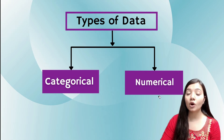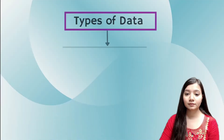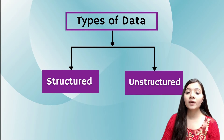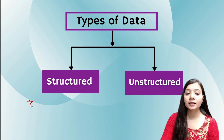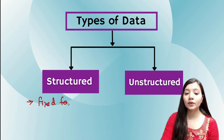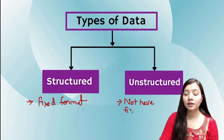So let's understand types of data on the basis of structure. Data is divided into structured and unstructured. Structured data contains a fixed format, whereas unstructured data does not have a fixed format.